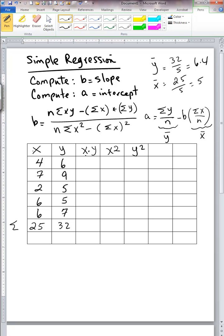Then we compute x times y. So 4 times 6 is 24, 7 times 9... So 169 is the total for x times y column.